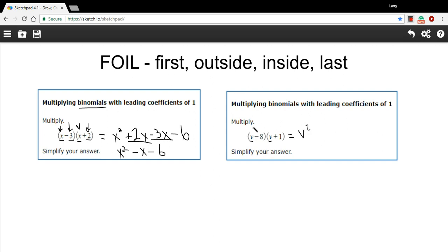And then the outside terms, v and 1. That's just plus v. And then the inside terms, negative 8 and v. So that's minus 8v. And then the last terms, a negative 8 and a positive 1 is minus 8.